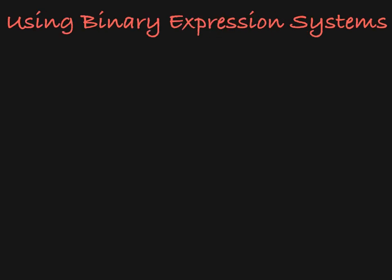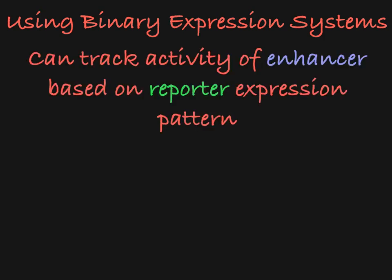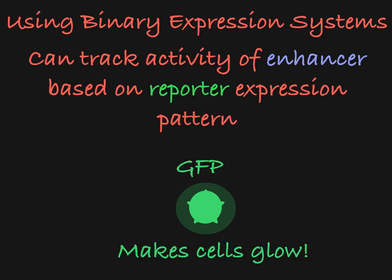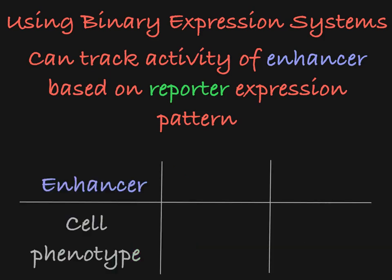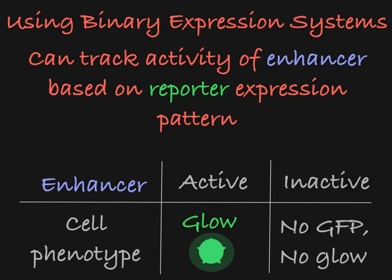How does this help us achieve our goal of understanding spatiotemporal expression of certain genes? We can track the activity of this enhancer by observing the expression pattern of the reporter gene. A popular reporter is GFP, which encodes green fluorescent protein. Cells in which GFP is expressed will glow, so cells that have this enhancer active will glow, and cells in which this enhancer is not active will not glow.